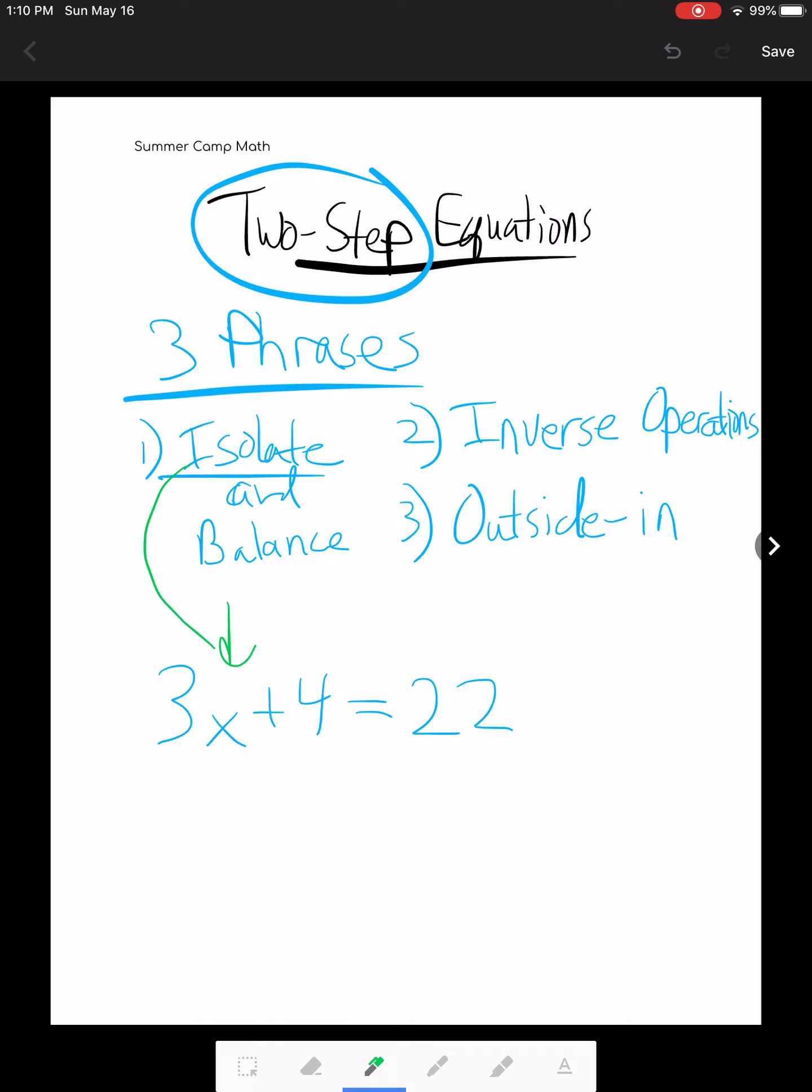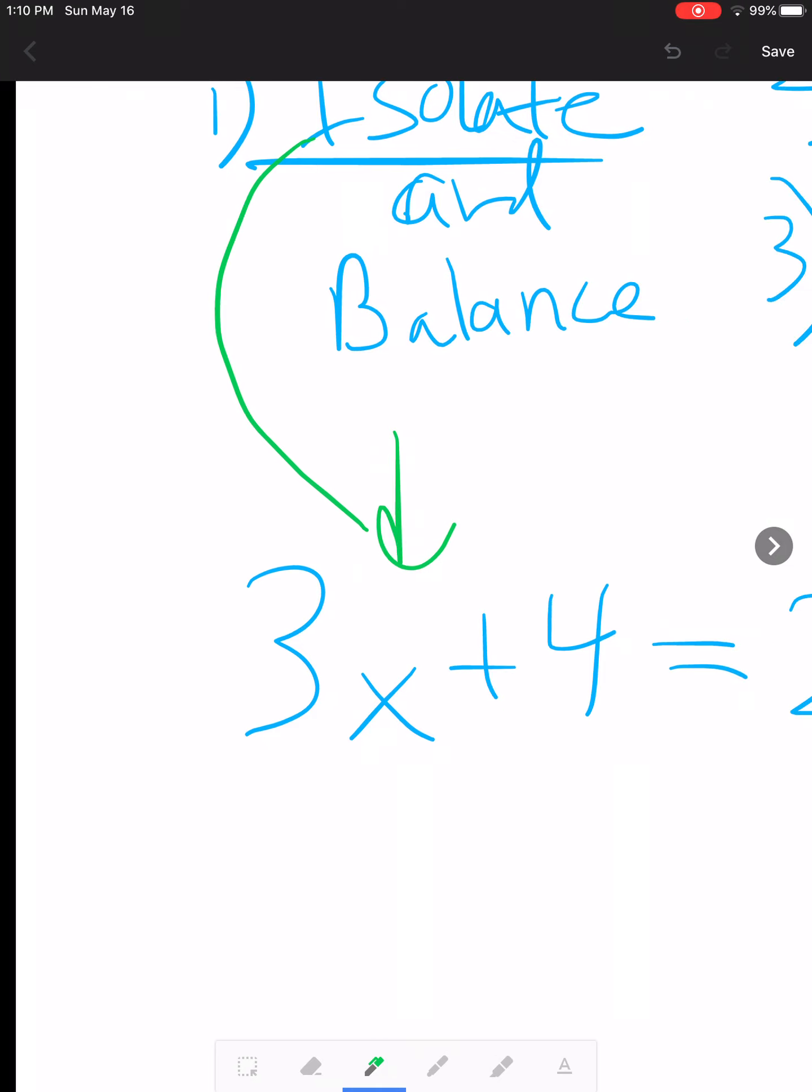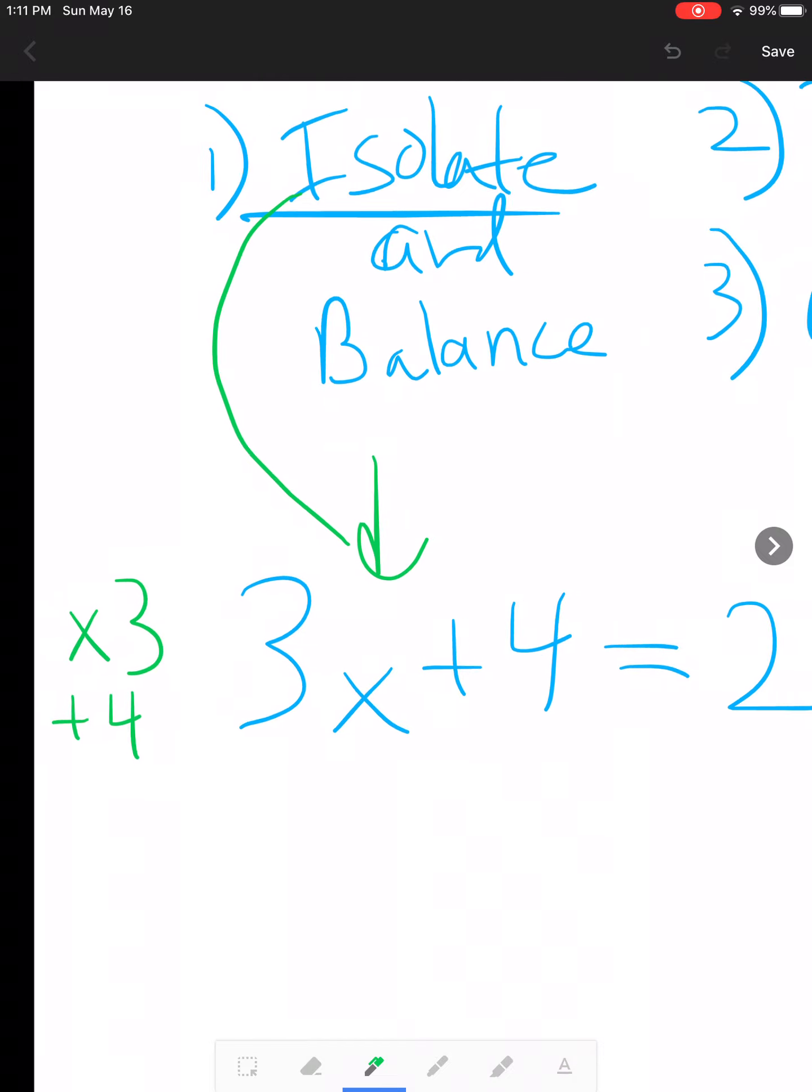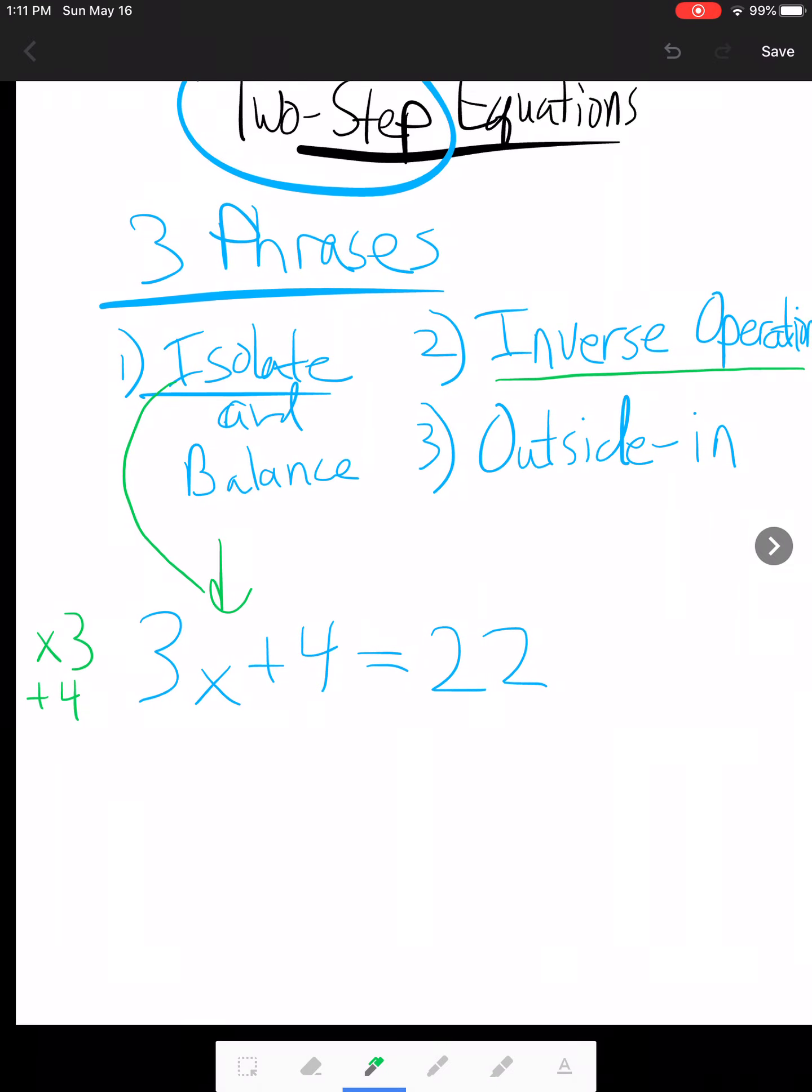Now we get to the second phrase, inverse operations. We want to see what's happening to our variable. And right now, there are two things that are happening to our variable. We are multiplying it by 3, and we are also adding 4 to it. Now this gets us to the final phrase, outside in. How do we know which one to do first?